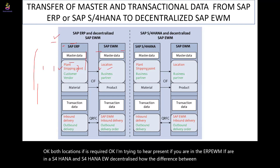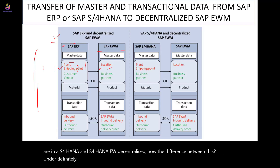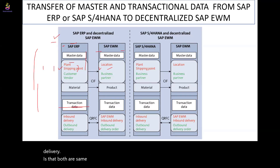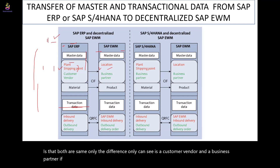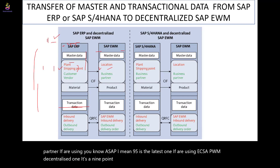For both decentralized setups, qRFC and the distribution model are used to distribute inbound deliveries — both are the same in that regard. The only visible difference is customer/vendor in ERP versus business partner in S4. If you are using SAP EWM 9.5 decentralized with ECC, that is one process; if you are going decentralized with S4 HANA, that is the other process.